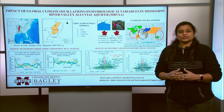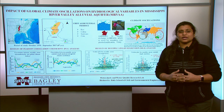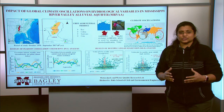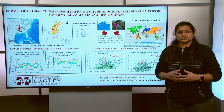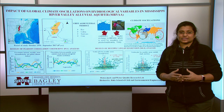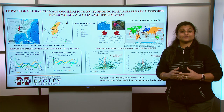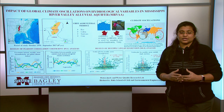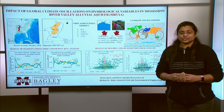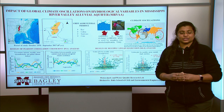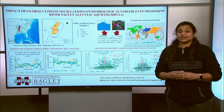Climate oscillations are naturally reoccurring climate patterns that are associated with atmospheric and oceanic interactions and occur over different geographic scales and at different time periods. The predominant climate oscillations are the North Atlantic Oscillation, Pacific Decadal Oscillation, and Atlantic Multi-Decadal Oscillation.